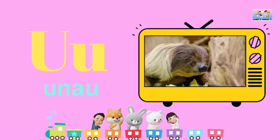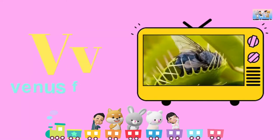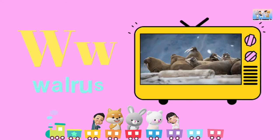The letter U. U is for uakari. The letter V. V is for vulture. The letter W. W is for walrus.